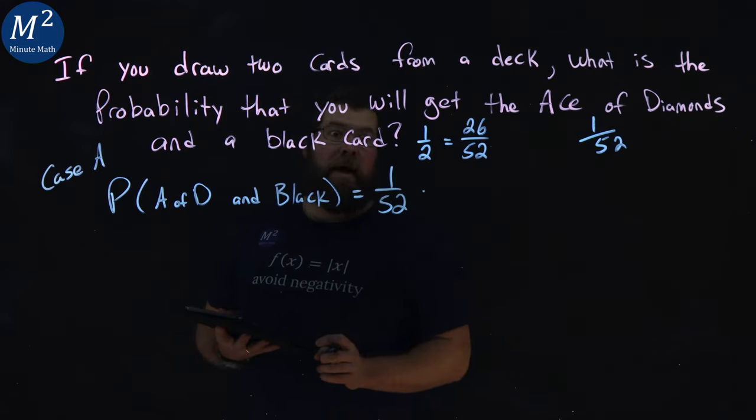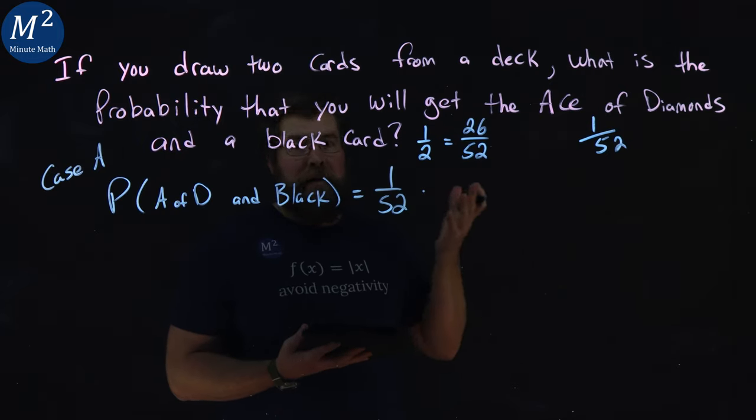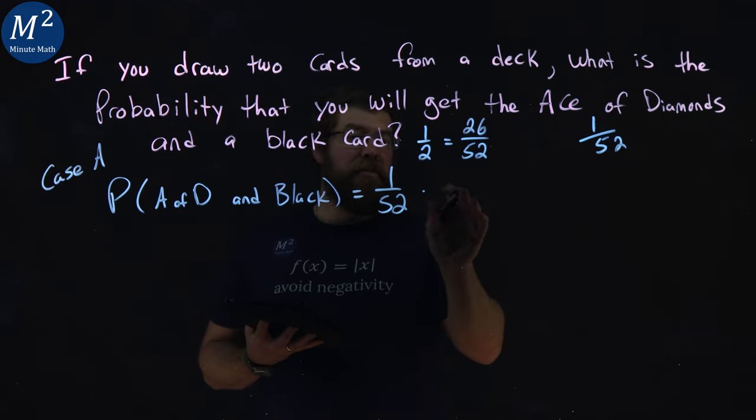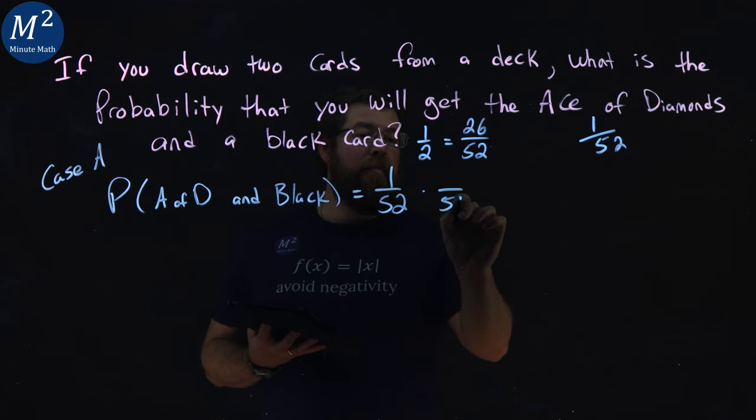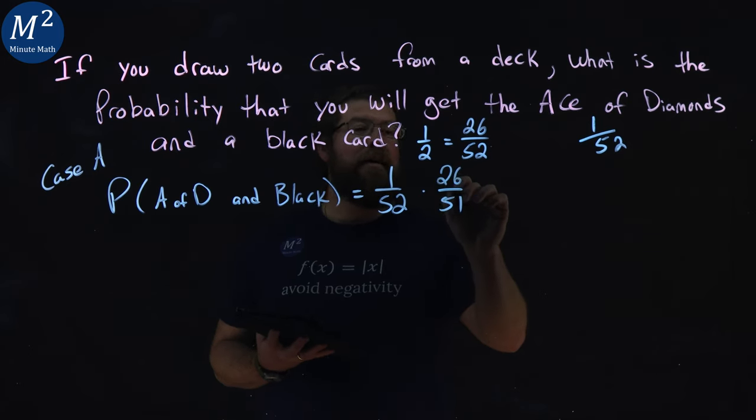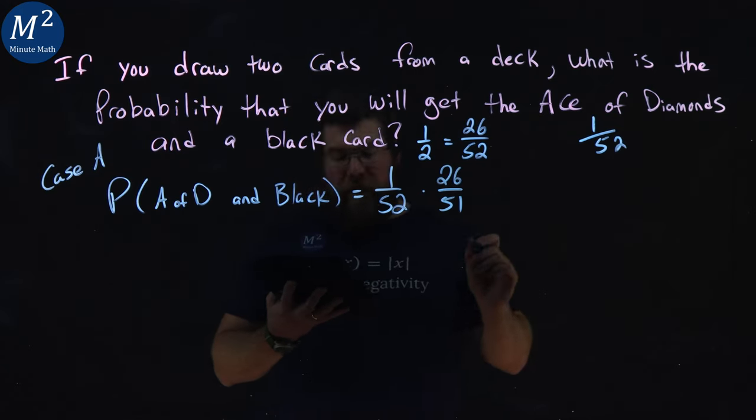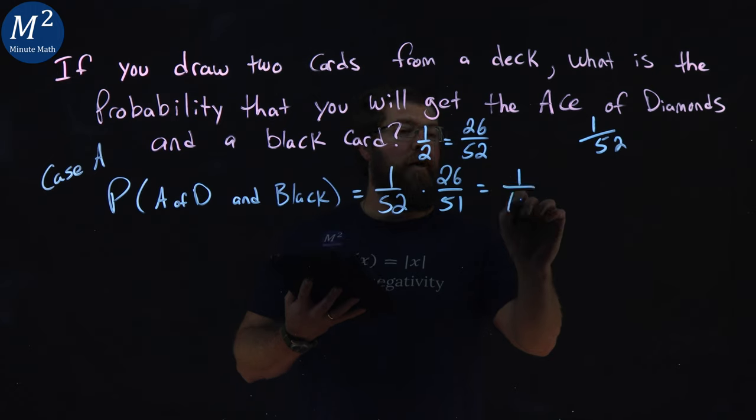We multiply that by the probability of getting a black card. One card is already out of the deck. Ace of diamonds is not a black card, so don't worry about that changing just the total number of cards in the deck. 52 becomes a 51, and there's still 26 black cards left over. This multiplies out to be simplified 1 over 102.